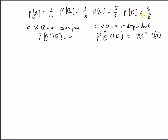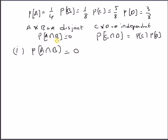Using this information and these properties, we want to find the probabilities of different combinations of events A, B, C, and D. The first one is probability of A∩B, which is obviously equal to 0, since A and B are disjoint — that means probability of A∩B is 0.